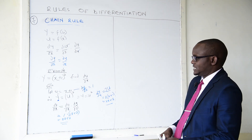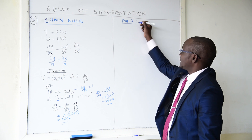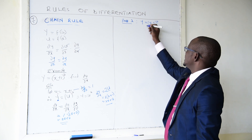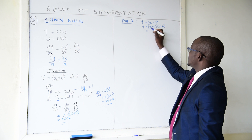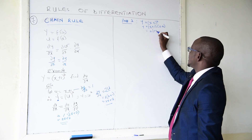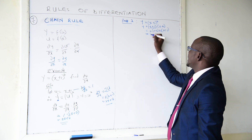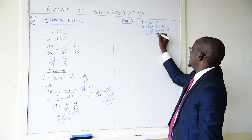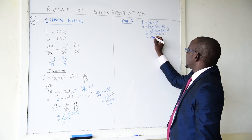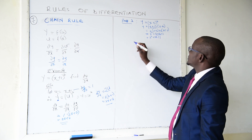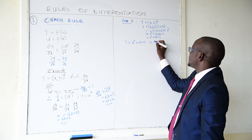We can prove this. When you start by opening the brackets: y equals (x+1) squared is the same as (x+1)(x+1). Expanding: x times x gives x squared, x times 1 gives x, 1 times x gives x, and 1 times 1 gives 1. So y equals x squared plus 2x plus 1.